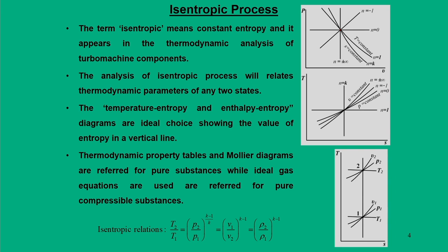The ideal choice is the temperature-entropy or enthalpy-entropy diagram, because the constant entropy line is represented as a vertical line. When the process is analyzed for estimation of different parameters, we look for thermodynamic property tables available in all fundamental thermodynamics books; we also explore Mollier diagrams, which are the enthalpy-entropy diagrams. For ideal gases, we have derived the isentropic relations between two states — that is pressure, temperature, specific volume, and density. This relation is very vital for analysis of isentropic processes.